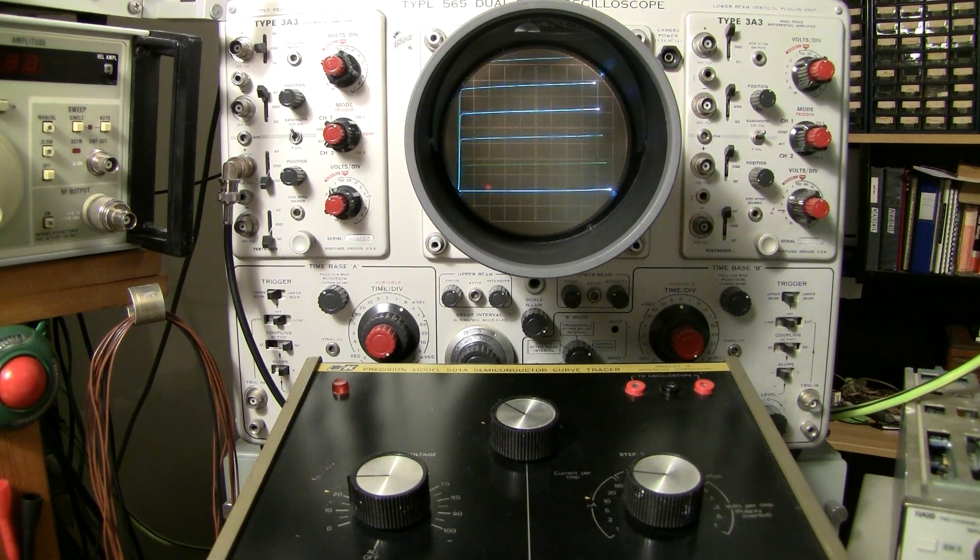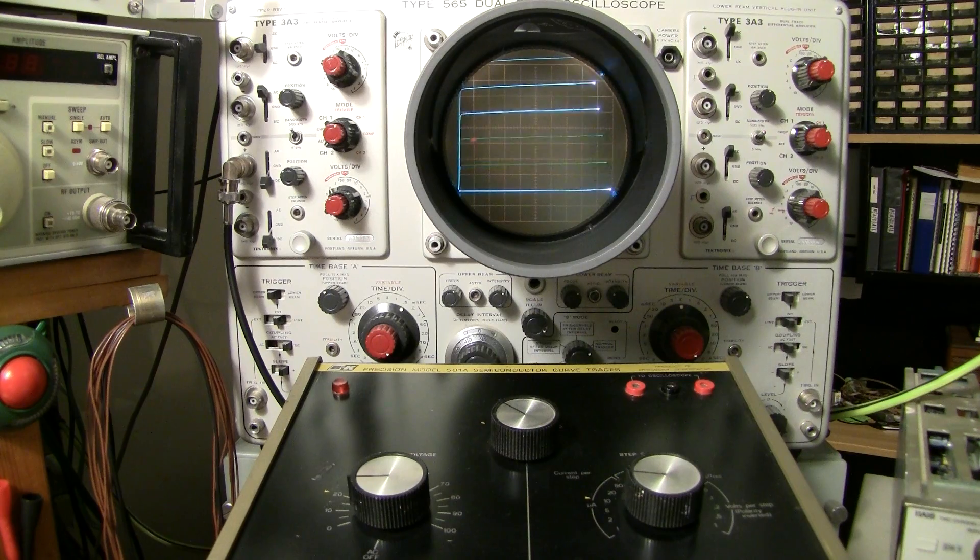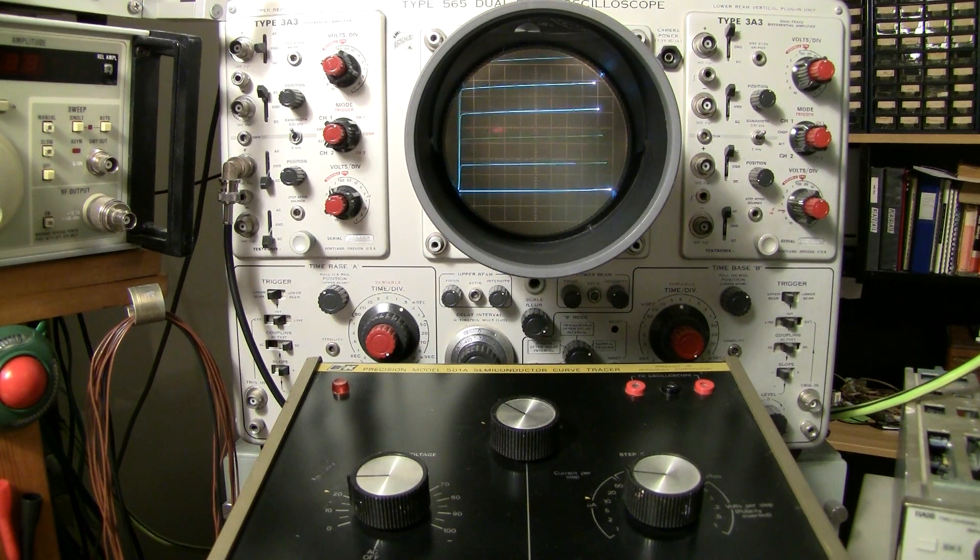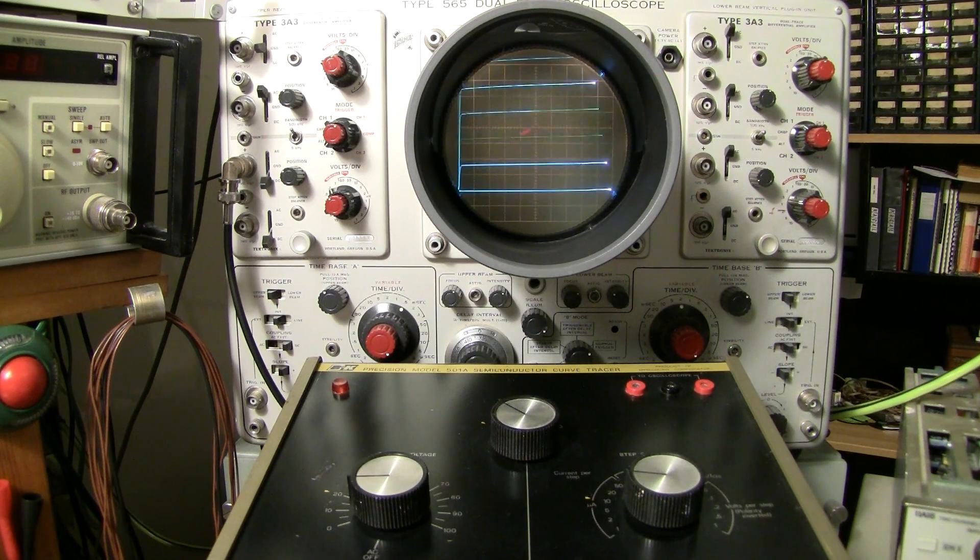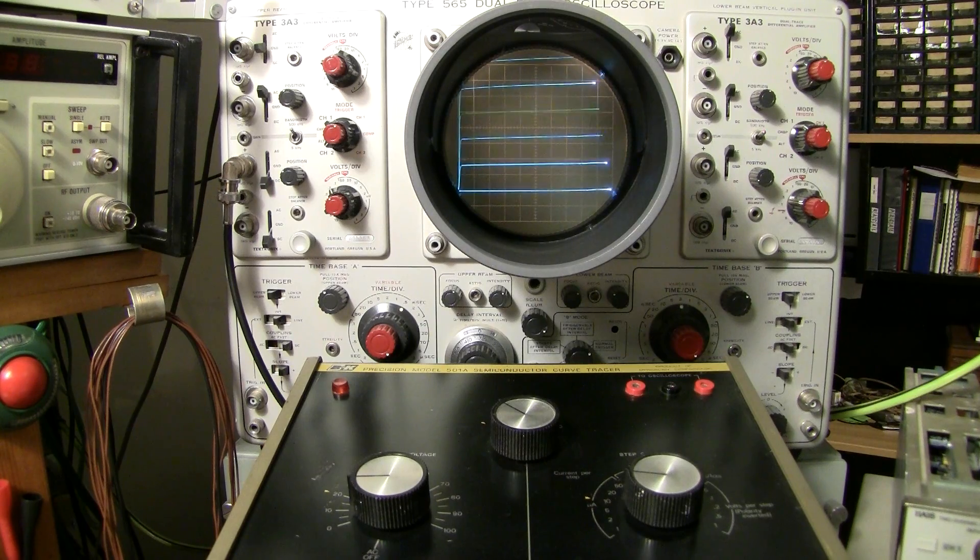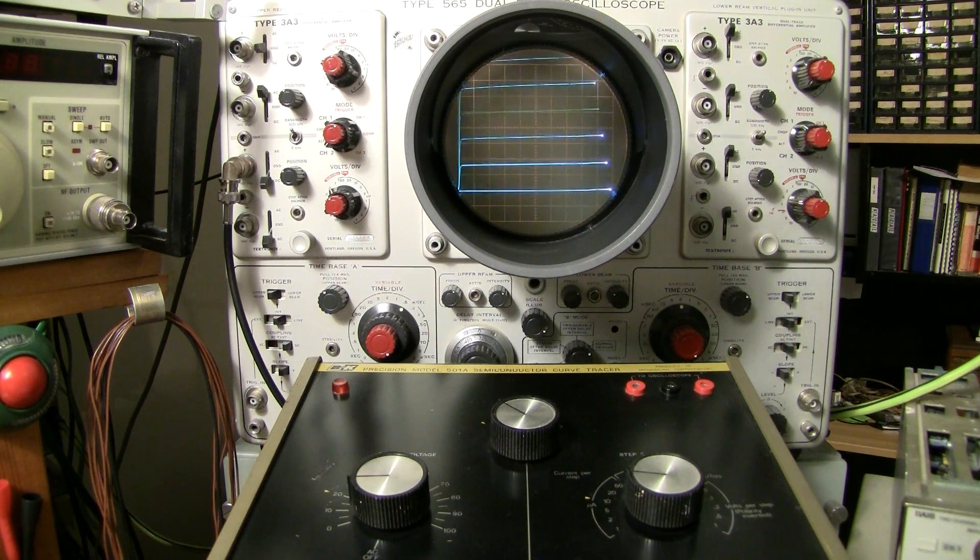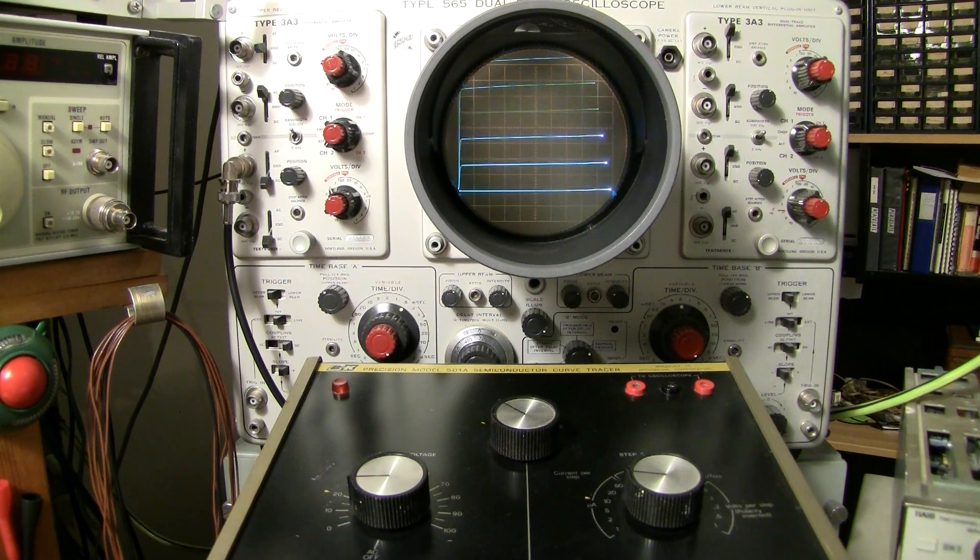If we took it anywhere else on the screen, it would work out to be a little bit different because you can see the lines, the actual steps don't follow the graticule evenly. So it would be a little bit different at this point than it would be at this point, but we used the 5 volt point to calculate this. And that's just how simple it is to calculate your transistor's AC current gain.